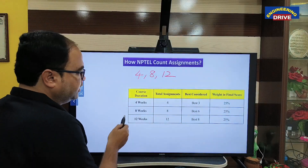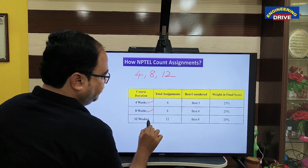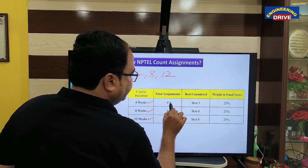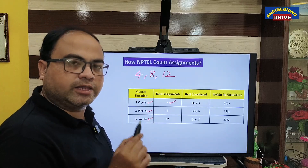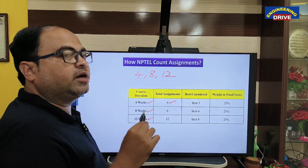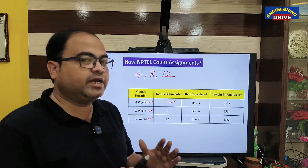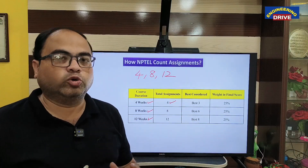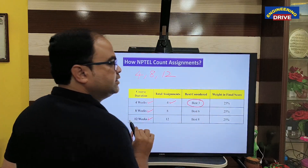As already mentioned, 3 types of courses are there: 4 weeks, 8 weeks, and 12 weeks. In a 4-week course, 4 assignments will be given to you and you need to submit these 4 assignments. Now the question is: if I submit 4 assignments, how many assignments will NPTEL consider to calculate the marks? Whether NPTEL will consider all 4 assignments? The answer is no.